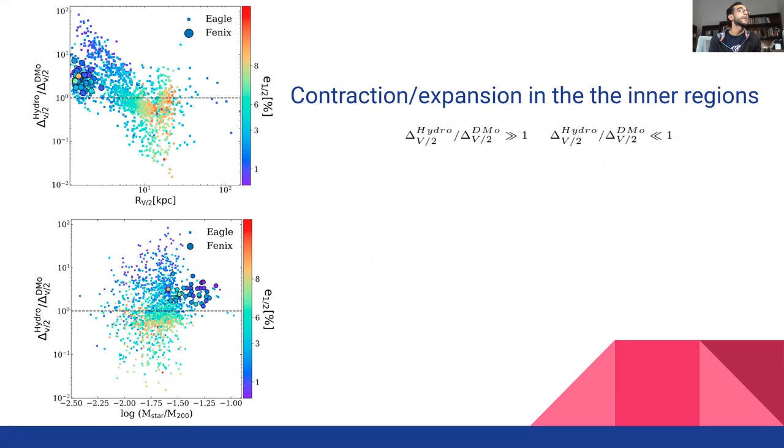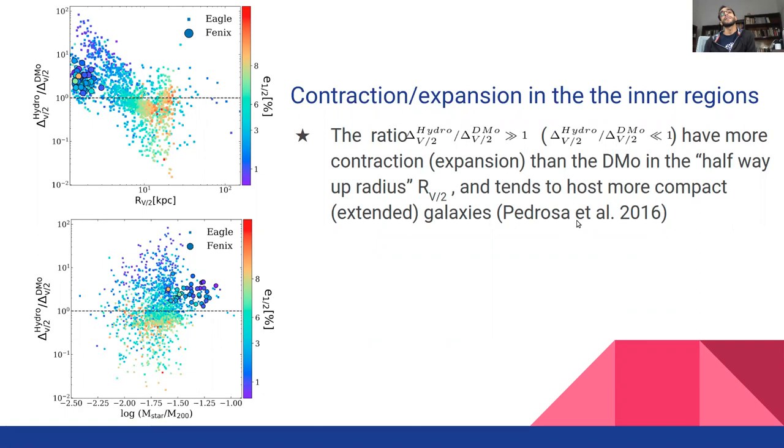The change of the dark matter contraction in the inner regions can be also quantified through the contraction expansion parameter delta. We can see that halos that contract have more compact galaxies, blue dots, and shorter halfway up radius.